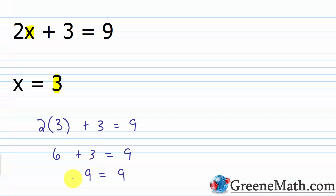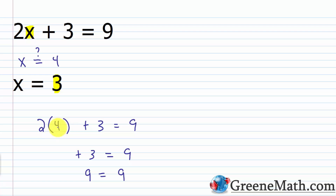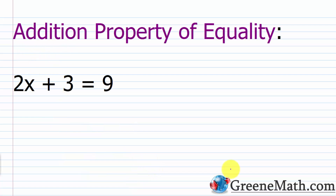To further expand on this, let's say I chose X equals 4. Is that the solution? Well, 2 times 4 is 8, so I'd have 8 plus 3, which is 11. And 11 does not equal 9 — this would be a false statement. So X does not equal 4. That's wrong. We know X equals 3. So how do we go about solving a linear equation in one variable?